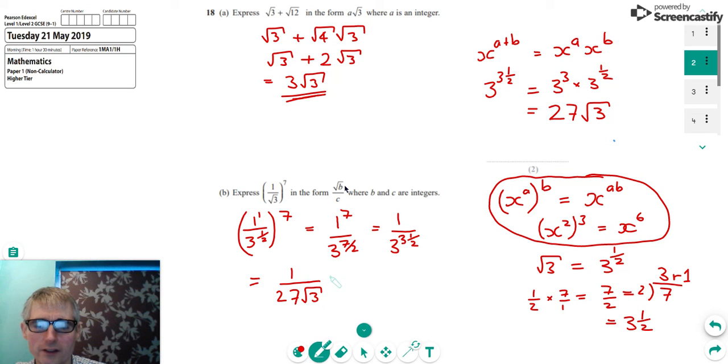And this is something called rationalising the denominator. So to do that, we can simply multiply top and bottom of this fraction by root 3. And the reason for that is because if I multiply a root by itself, the roots cancel. So just looking at root 3 times root 3, what I mean is that root 3 times root 3 gives us actually 3.